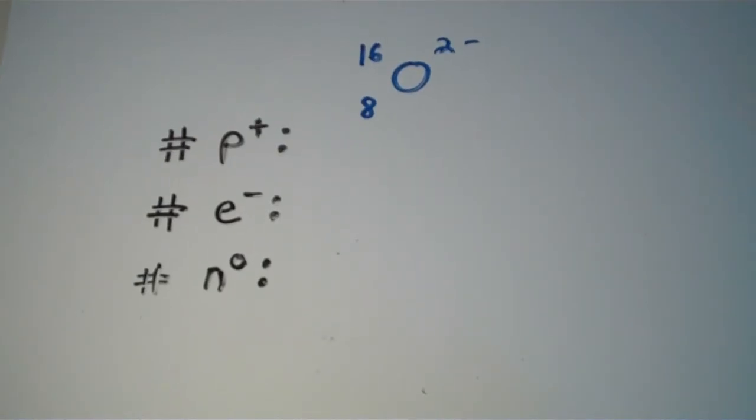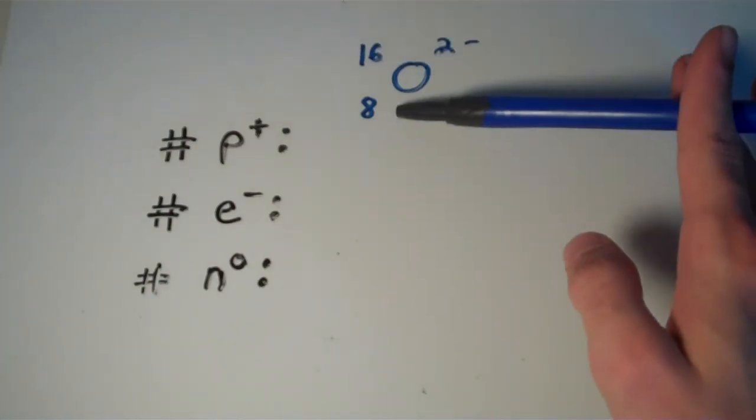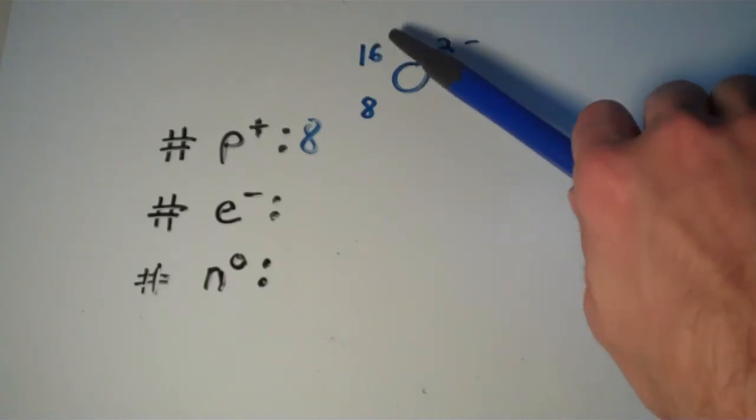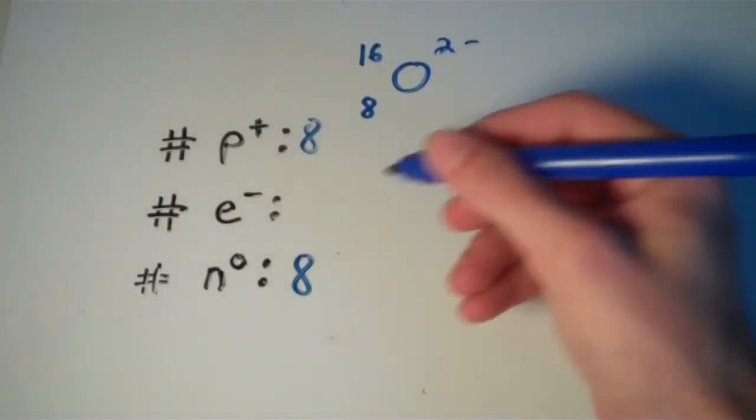Alright, so how many protons, electrons, and neutrons are in this? Protons is easy, that's just this number right here, 8. Neutrons, 16 minus 8, 8.